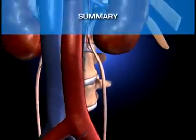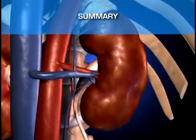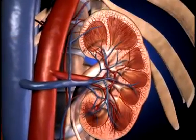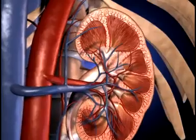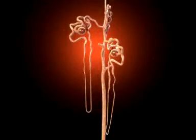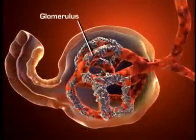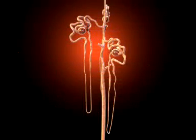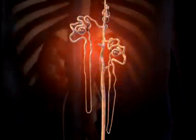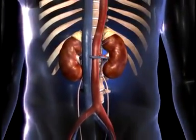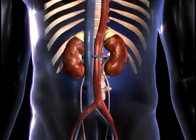The kidneys perform an excretory function by filtering the blood and then selectively reabsorbing those materials that are needed to maintain a stable internal environment. The nephron is the functional unit of the kidney, composed of a glomerulus which filters the blood, and a tubular component where necessary substances are reabsorbed into the bloodstream and unneeded materials are secreted into the tubular filtrate for elimination in urine.